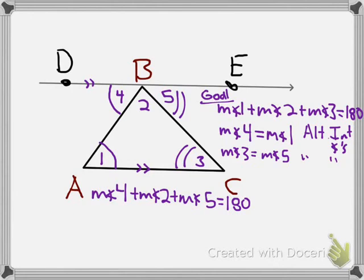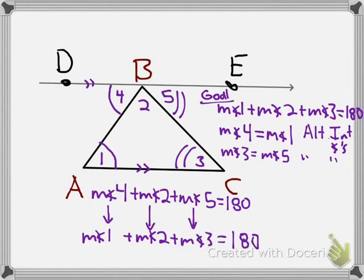And we can add angles together by the angle addition postulate. So all we've done here now, is we can take the 4, and replace it with something that it's equal to, angle 1. We can take the 2, which stays the same. It's in both of them, really. It's in a straight angle, and it's in the triangle. And we take 5, and replace it with angle 3. And we still have that 180 degrees. Now what lets us replace them? It's something we call substitution.